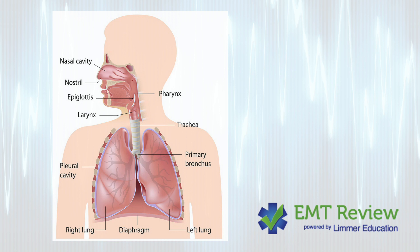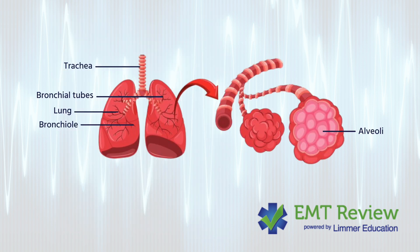We think of the upper airway as the larynx and above. So the upper airway includes the larynx, the epiglottis, and the pharynx — which is above the larynx. We have the oropharynx and the nasopharynx. That's really the upper airway. The lower airway is largely considered the tracheobronchial tree below the larynx and the vocal cords.